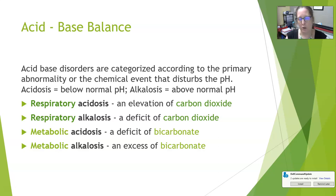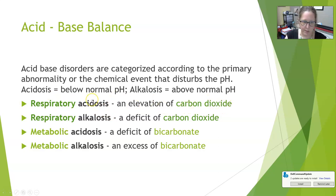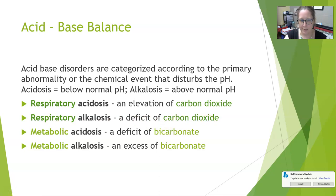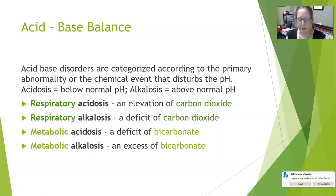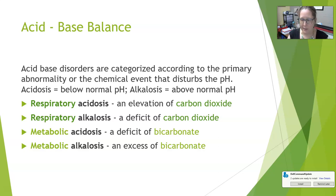If the disorder is respiratory, it is carbon dioxide that is either too high or too low. If it is metabolic, it is the bicarb that is either too high or too low. Respiratory acidosis has an elevation of CO2, respiratory alkalosis has a deficit of CO2, metabolic acidosis is a deficit of bicarb, and metabolic alkalosis is an excess of bicarb.